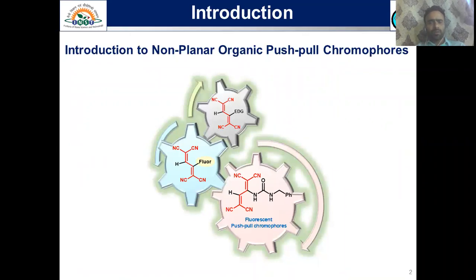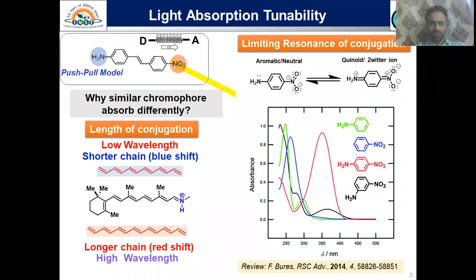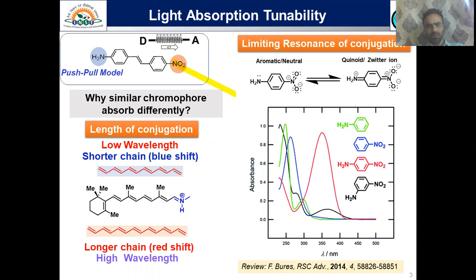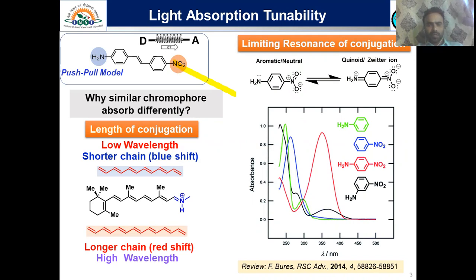Before going into the main topic of my presentation, I will give a brief introduction about non-aromatic push-pull chromophores. Push-pull chromophores are simple molecules with an N group containing a donor and acceptor part. The presence of conjugation between the donor and acceptor groups, as well as the extent of conjugation, determines the properties of the molecule.